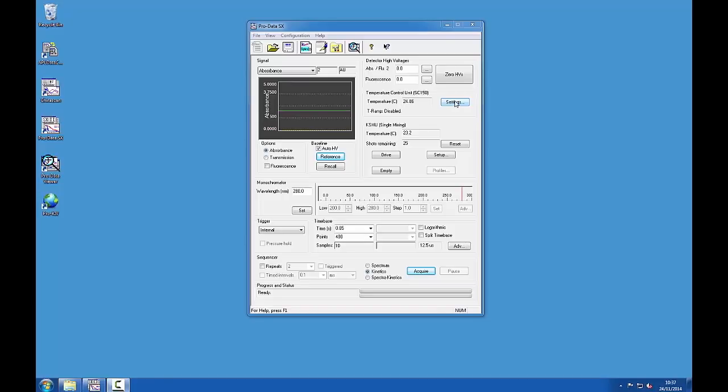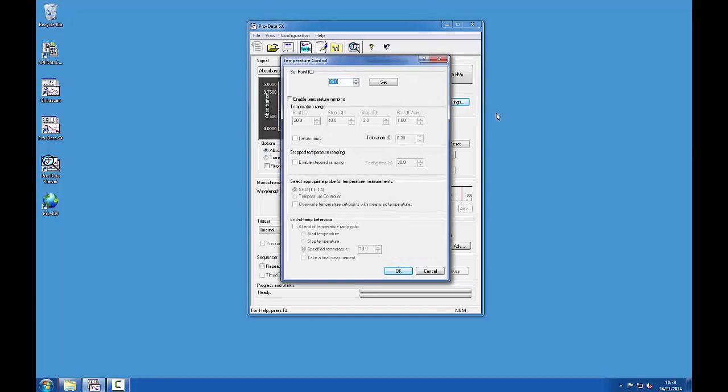Often we wish to control the temperature at which we make our measurements. To do this, turn on the circulator and set the desired temperature. For particular circulators, this can be done within the ProData software.